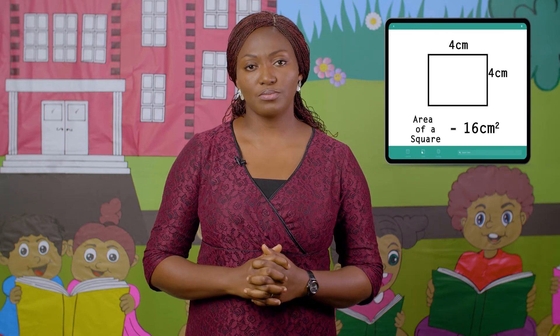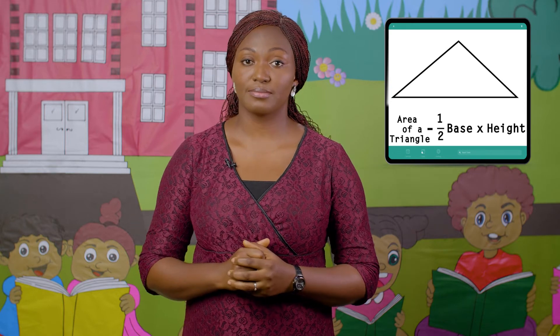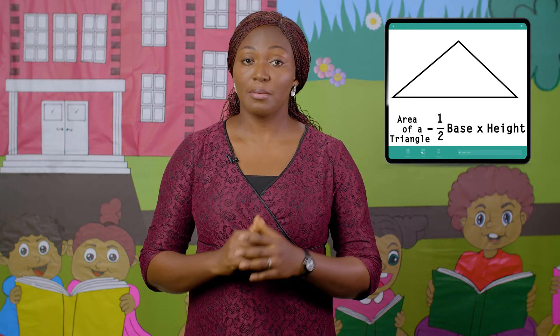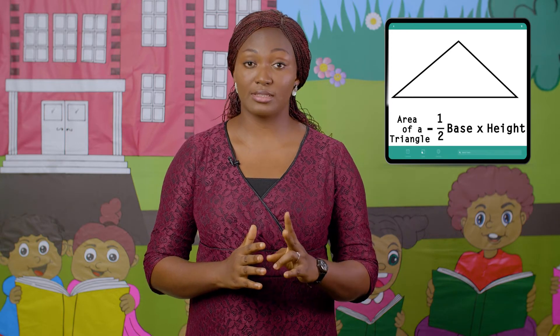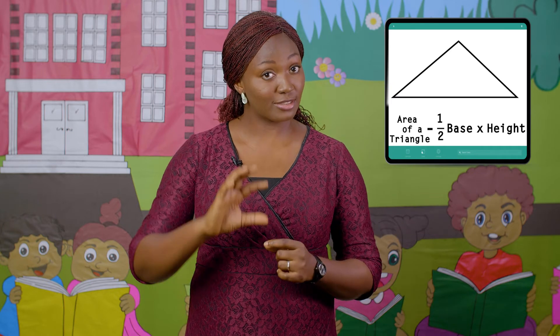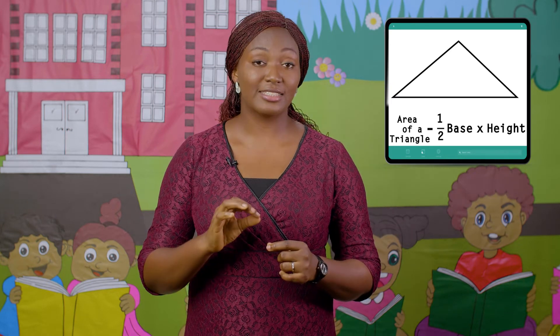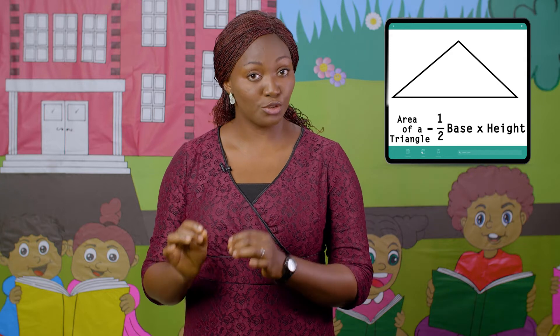Let's go on. Calculating the area of a triangle: we use half base times height. Because it is also area, we're dealing with two lengths — the length of the base and the length of the height — and it is calculated in square units.